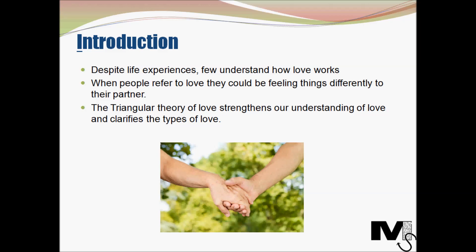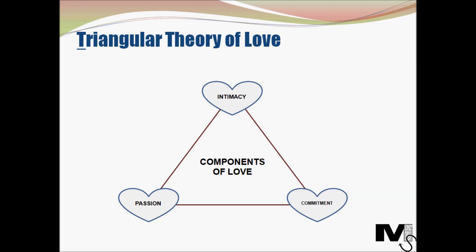To strengthen our understanding of love, Professor Robert Sternberg came up with the triangular theory of love and the types of love. So what is the triangular theory of love? Sternberg proposed that love is actually made up of three components: intimacy, passion, and decision or commitment.